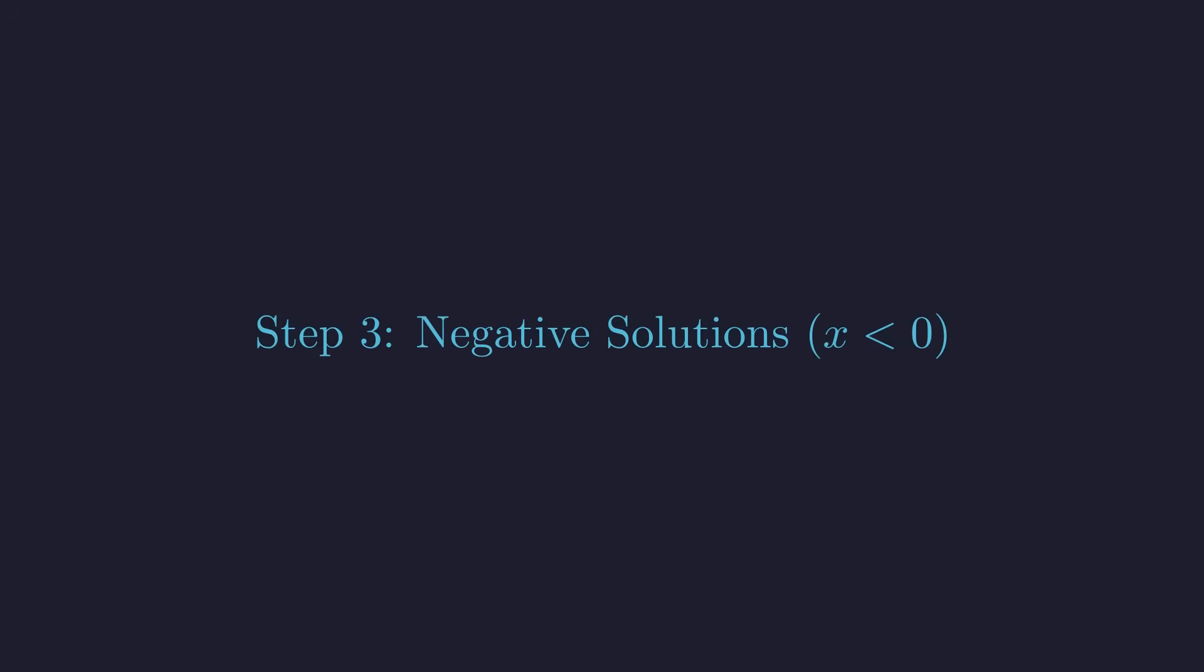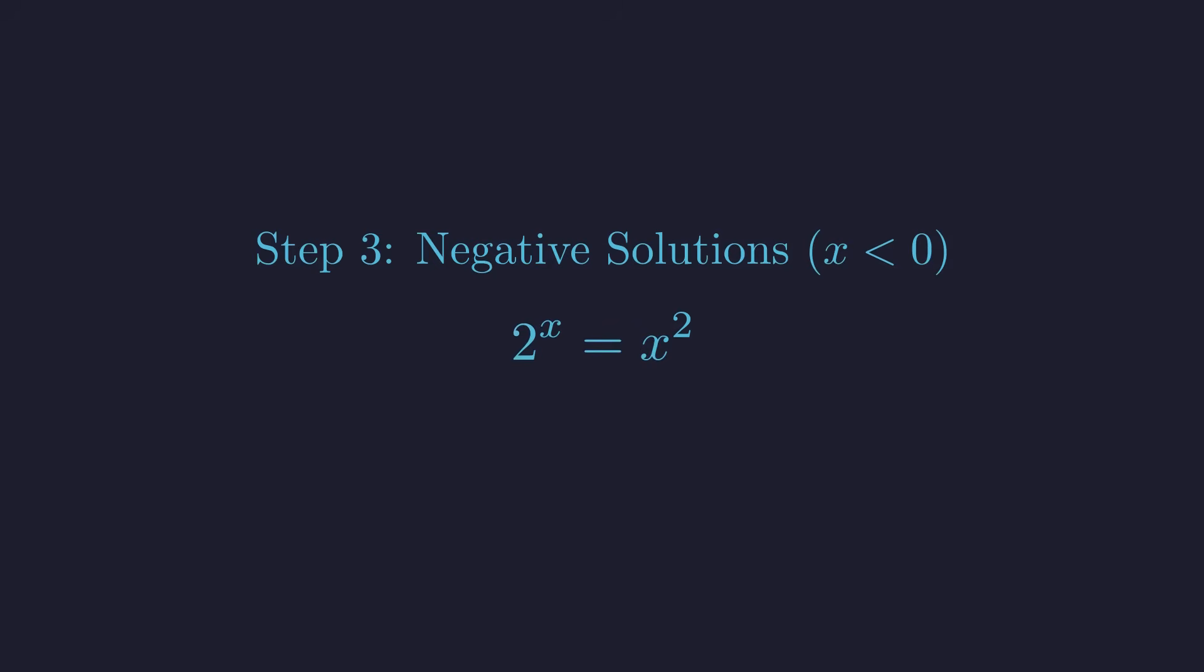Now for the trickiest part, what happens when x is negative? Here, logarithms become problematic since we can't take the log of a negative number. We need a completely different approach. Let's go back to our original equation and try a different tactic. What if we take the square root of both sides? This transforms our equation into 2 to the x all raised to the power of 1 half equals x squared raised to the power of 1 half. Using the power rule, this simplifies beautifully to 2 to the power of x over 2 equals the absolute value of x. Since we're looking for negative values of x, the absolute value of x is just negative x. This gives us the equation we need to solve for our negative solution.